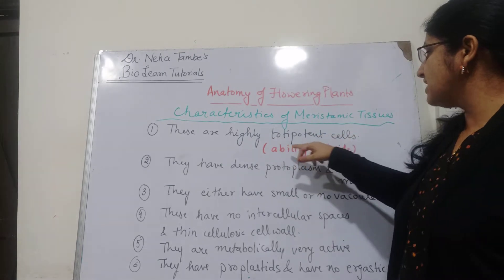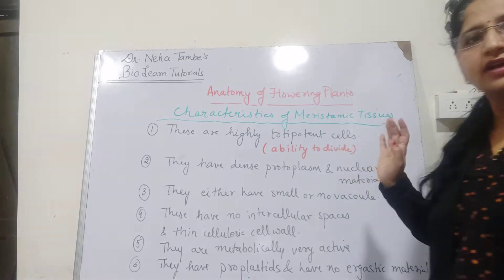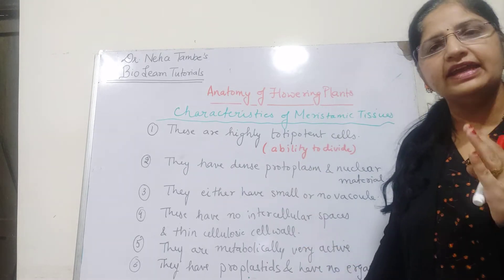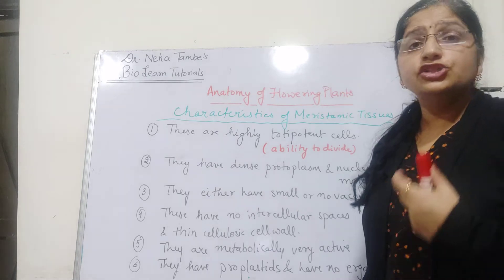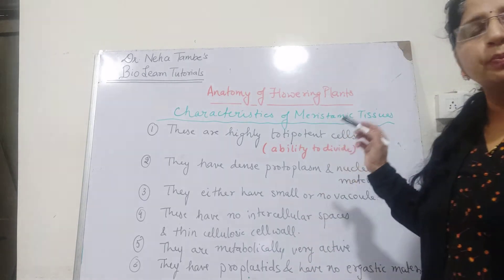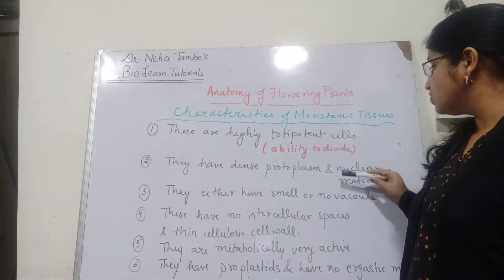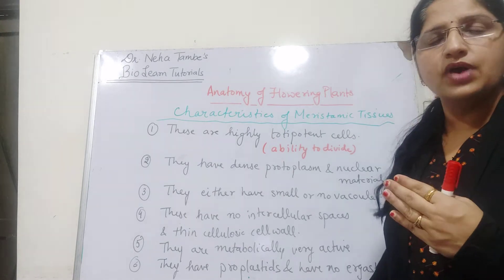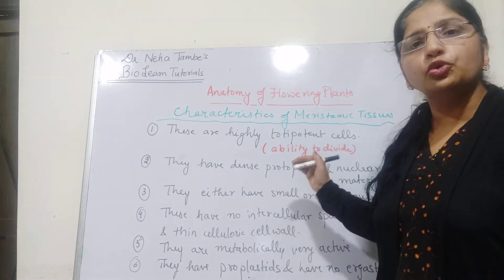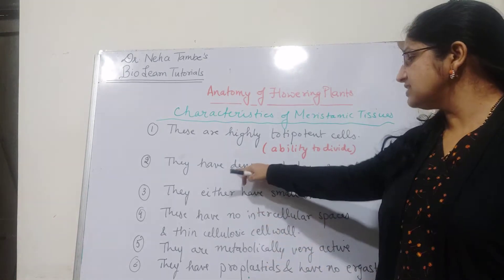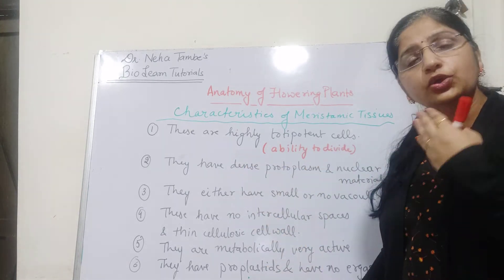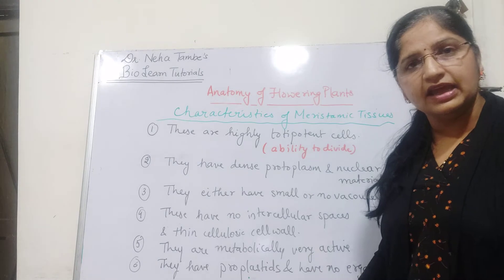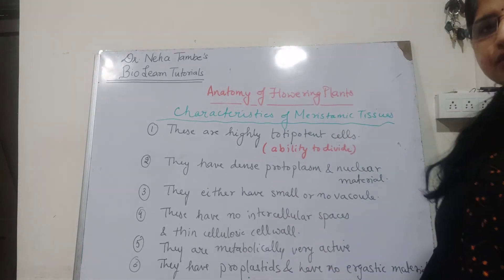These are highly totipotent cells, means they have a good ability to divide continuously. Because these are continuously dividing, they need to have very dense protoplasm. Aisa cell jisko divide hona hai continuously, uska protoplasmic material bahut zyada dense hona chahiye, uska nuclear material dense hona chahiye. Because division ke liye karyokinesis followed by cytokinesis, protoplasmic content should be very good. Pehle nuclear material divide ho, uske baad cytoplasm divide hota hai, tab jakar do cells bante hain. Aur isliye protoplasm ka dense hona zaroori hai.